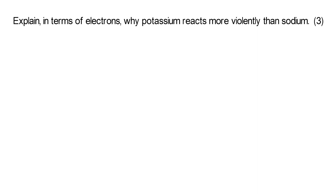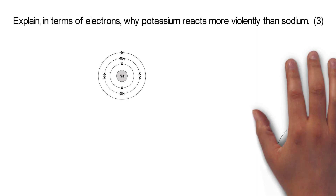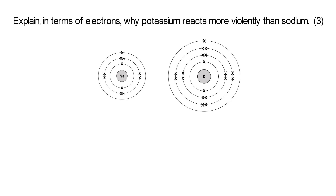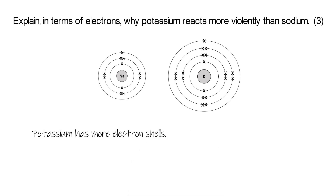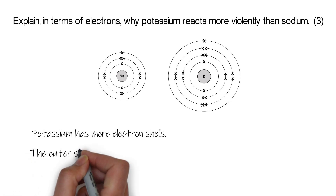A question is something like this: explain in terms of electrons why potassium reacts more violently than sodium. It's worth three marks. If you look at our sodium atom, it's got one electron in its outer shell because it's in group 1. And if we look at our potassium atom, it also has one electron in its outer shell because it's in group 1. Now both of these elements want to lose that electron in order for them to react. But we can see that potassium has got more electron shells in total because it's got more electrons. Now there's an attraction between the positive nucleus and that negative electron on the outer shell that they're trying to lose, and that's holding it in place.